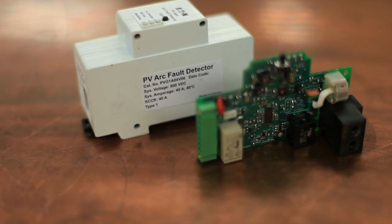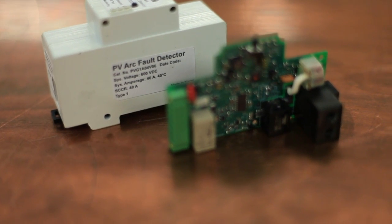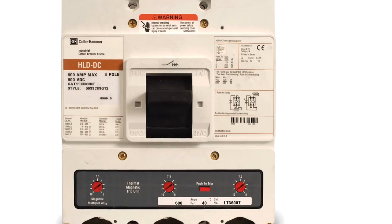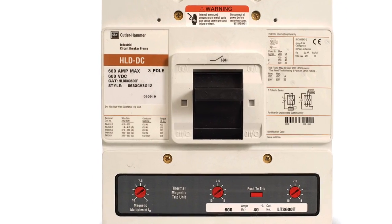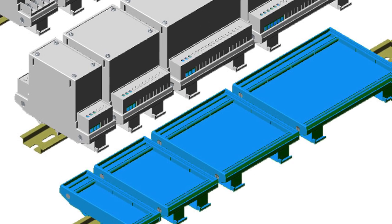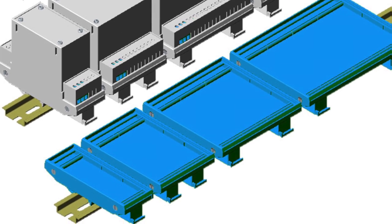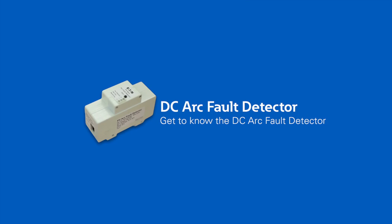Eaton's DC arc fault detector is also available in a populated printed circuit board. This allows for easy integration into Eaton devices or in a DIN rail mountable enclosure for use by OEMs and system integrators. So secure your PV installations.